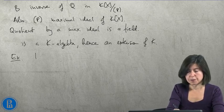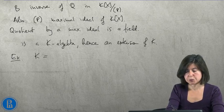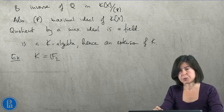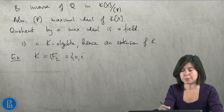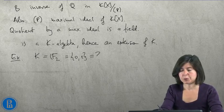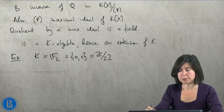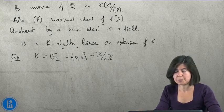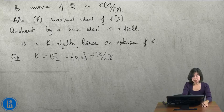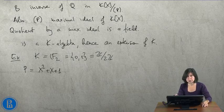Let's take K equal to the field of two elements, so Z/2Z, which consists of 0 and 1, and 1 plus 1 is 0. Let us take P equal to x squared plus x plus 1, so this is an irreducible polynomial over F_2.